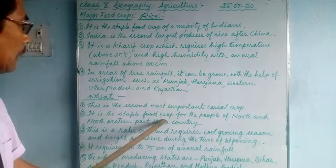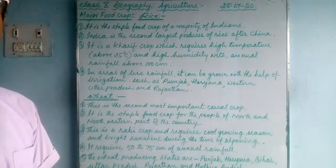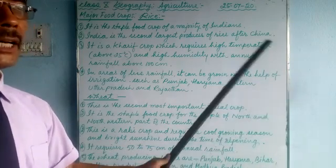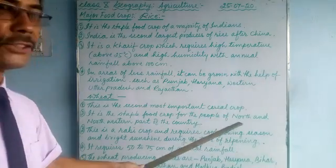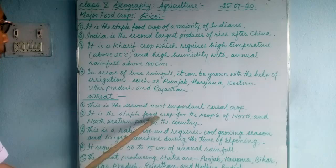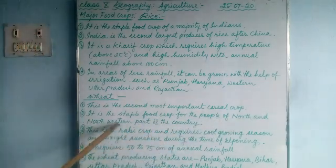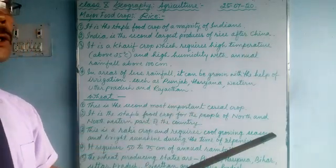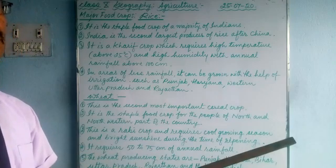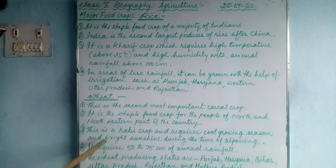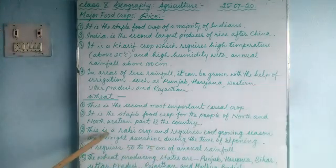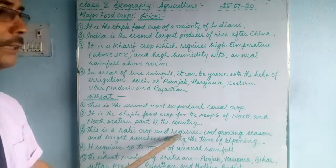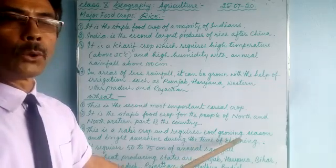Wheat is the staple food crop for the people of northern and north-western India — Bihar, Uttar Pradesh, Haryana, Punjab, Rajasthan, and Gujarat. It is the staple food crop in these regions because wheat grows in abundance there, with big wheat farms. This is a Rabi crop — it is grown in winter.